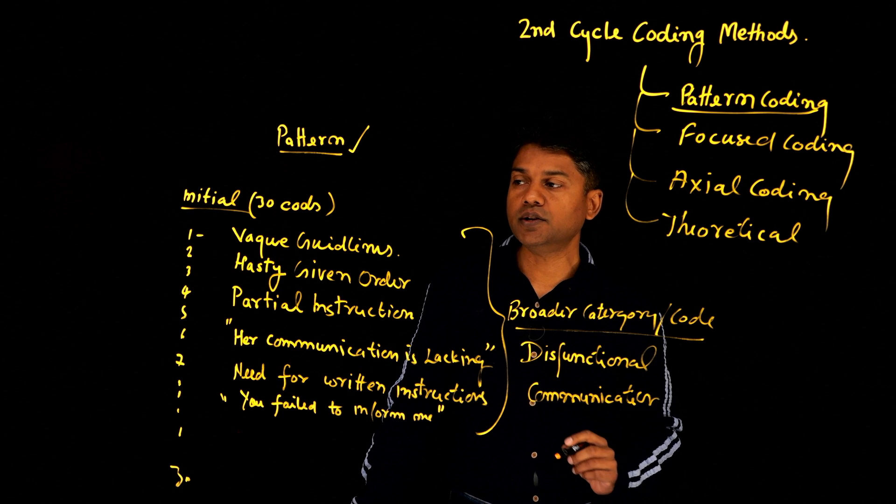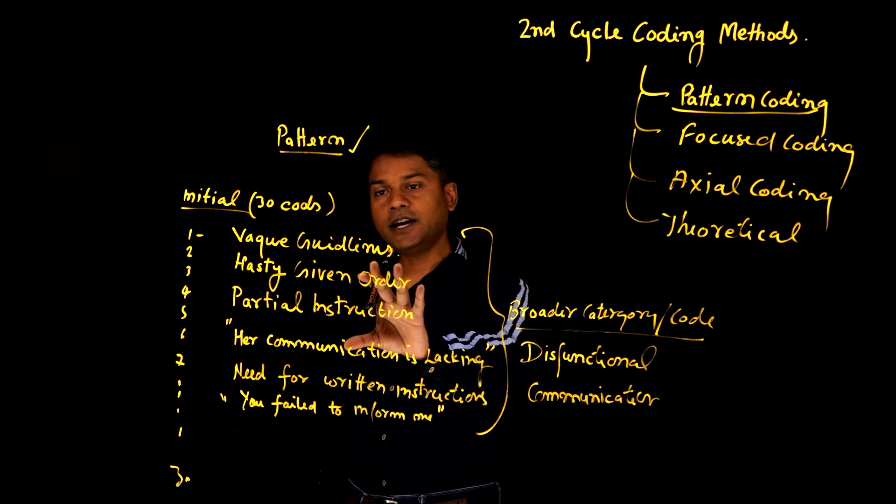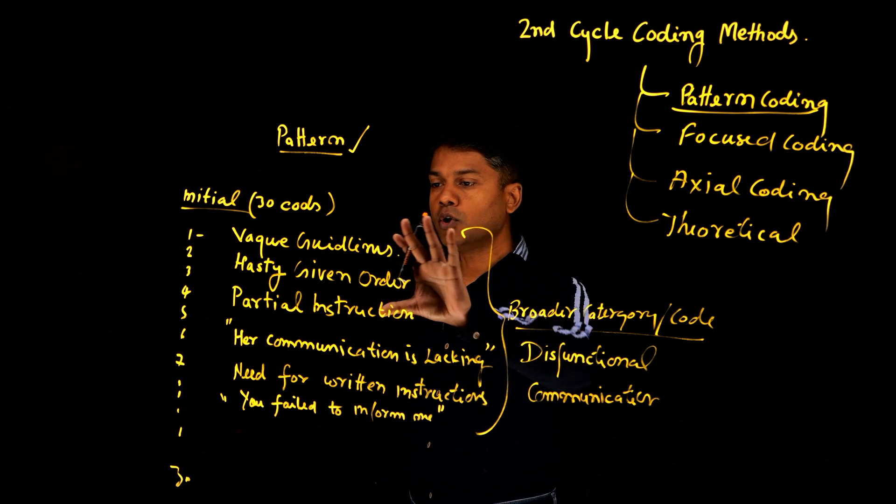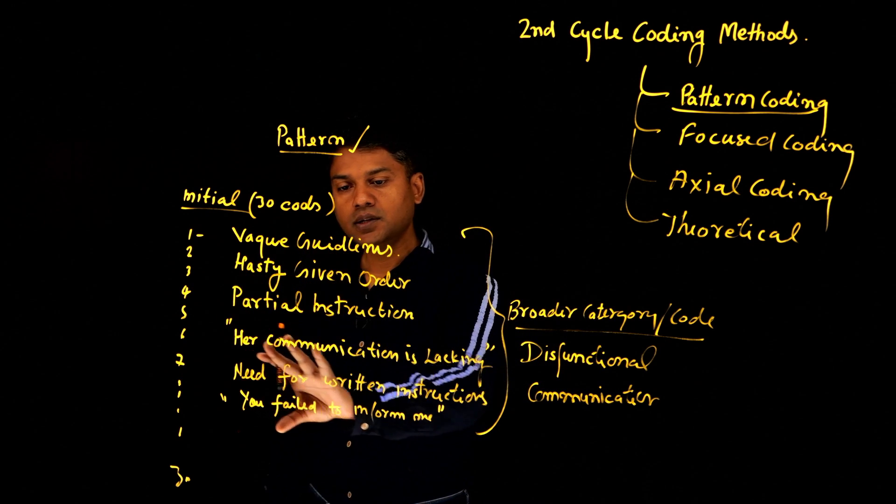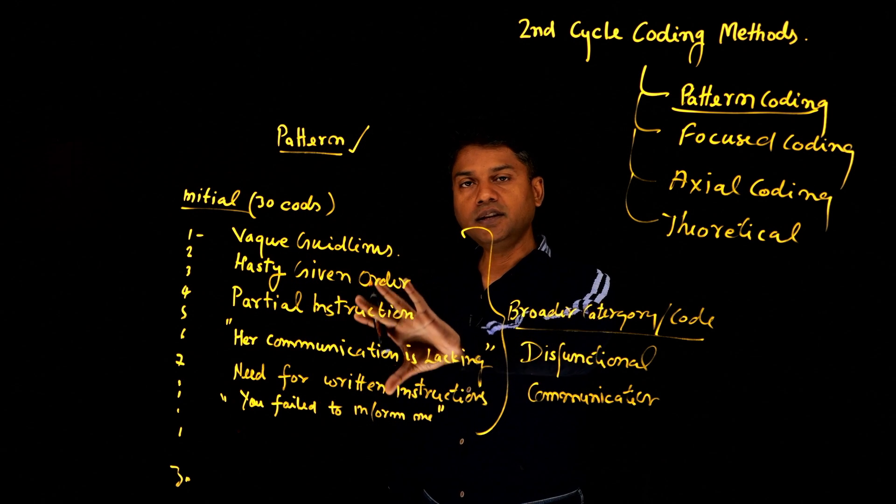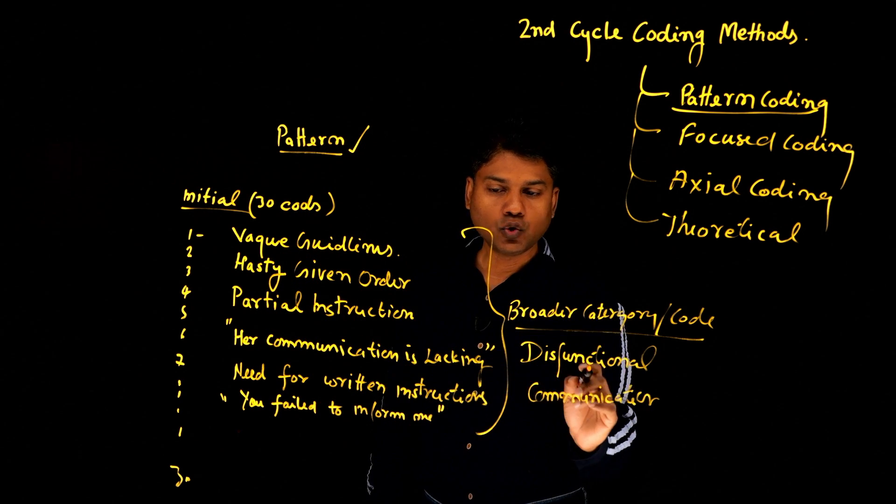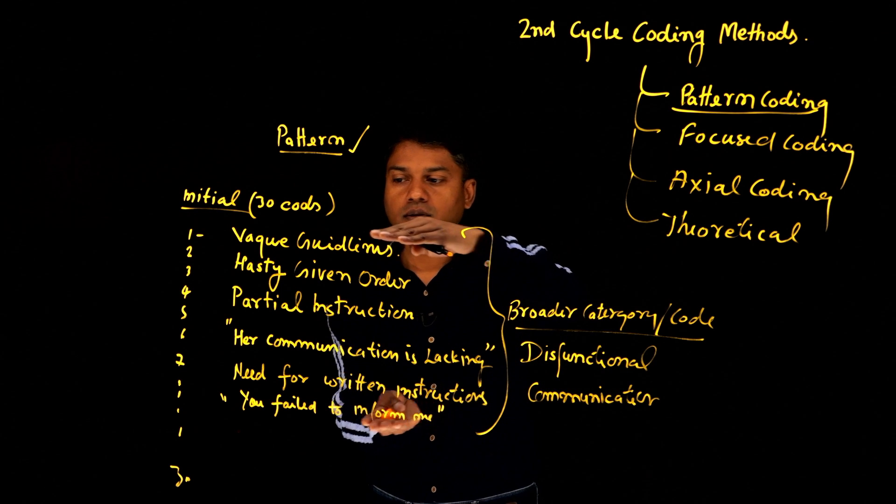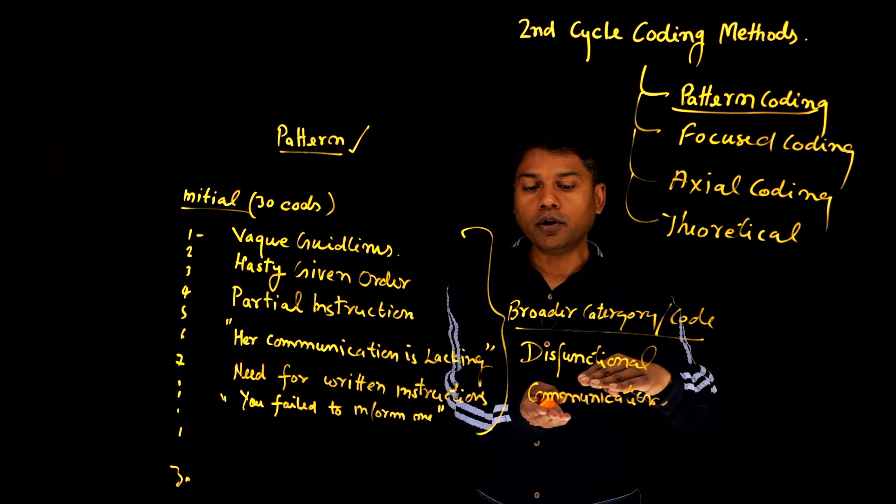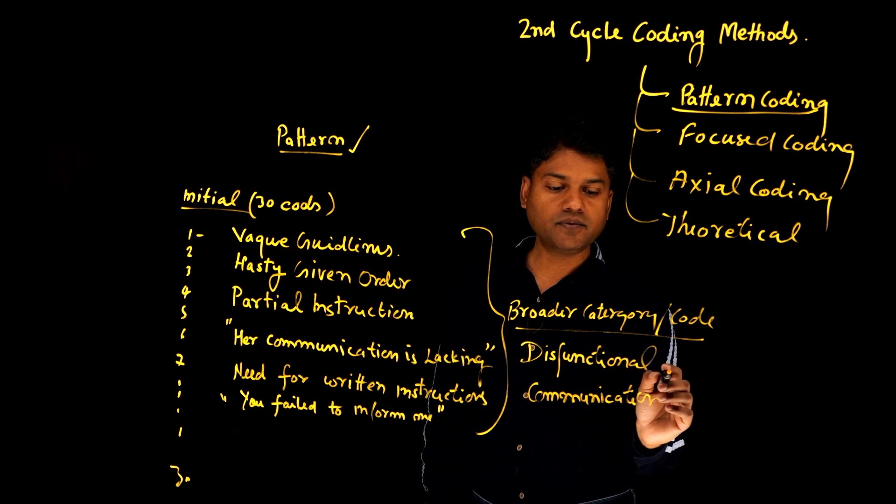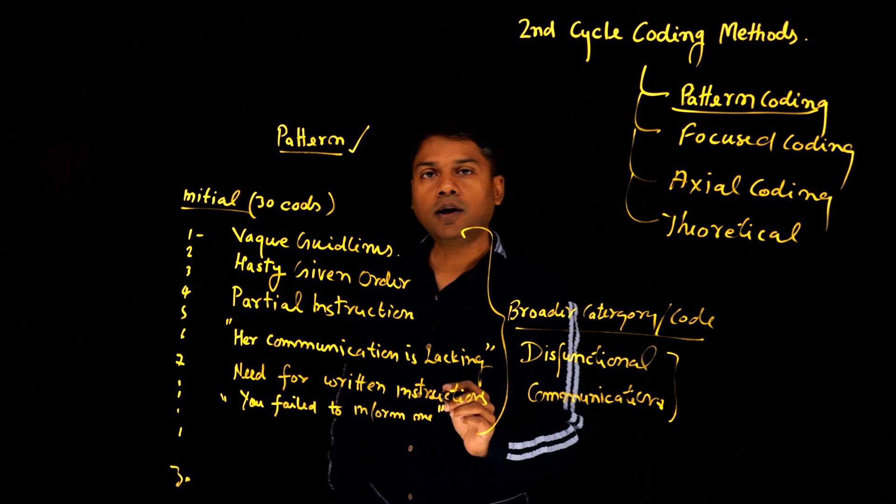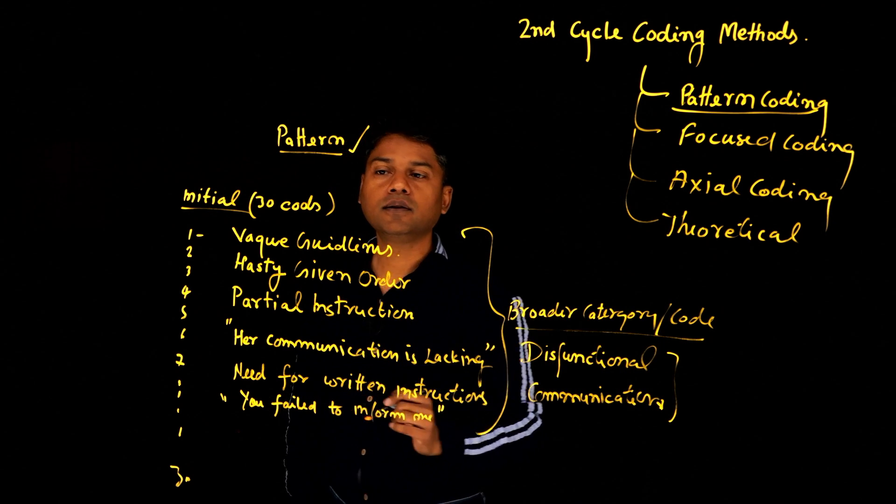Dysfunctional communication. And that really captures the essence here, the overall overarching theme, which is emerging from all these initial codes here. So we can code all these initial codes into another code, a broader code, which is dysfunctional communication. So that's what pattern coding looks like.